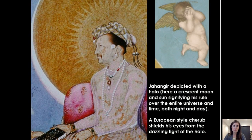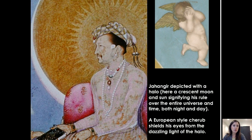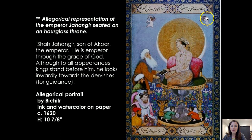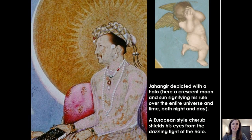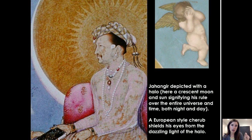Zooming in, you can see that Jahangir is very much framed by a beautiful halo composed of a sun and a crescent moon, indicating his power over the whole universe and over all of time — both day and night. There are also European-style cherubs, sometimes called putti. One cherub is covering his eyes, probably because Jahangir is so glorious. Some people have also suggested it could be a crying cherub — we often see crying cherubs in Christian imagery, and it's possible these artists saw cherubs from a Christian image and copied them into these Mughal paintings.